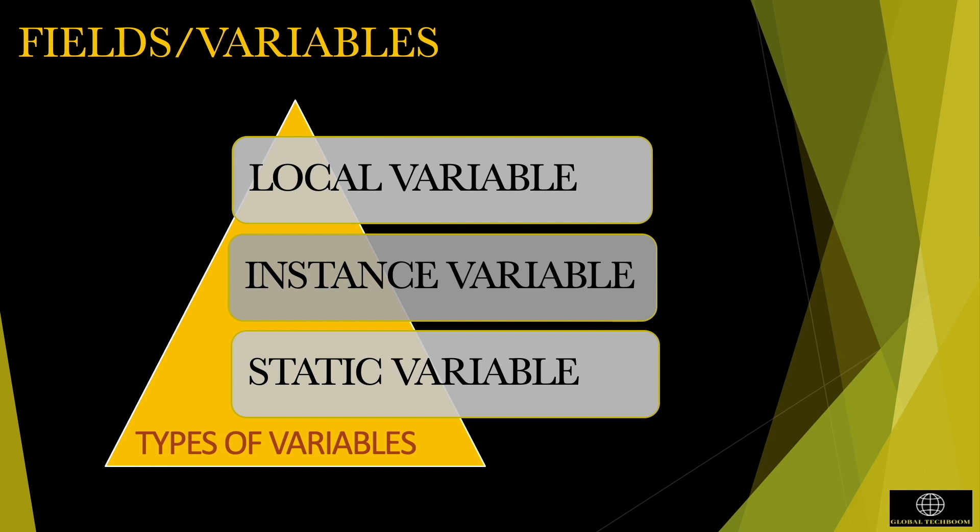The variables which are declared inside the class but outside the body of the method, constructor or any block are called instance variables. They are available for the entire class methods, constructors and blocks. The variable which is declared with static keyword is called static variable. A static variable is called class variable because it is associated with the class.